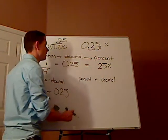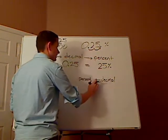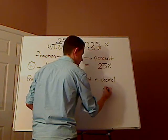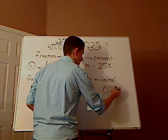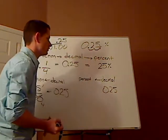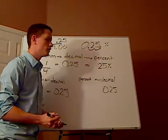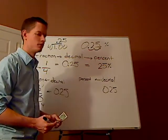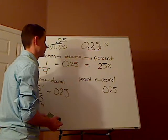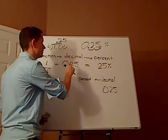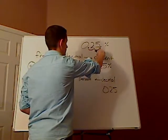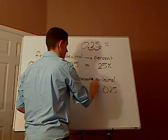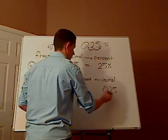Now, how do I convert a decimal, 0.25, to a percentage? Well, I did it up here. I simply moved this way. Right?